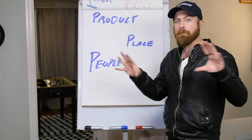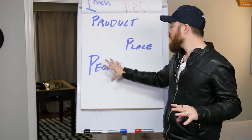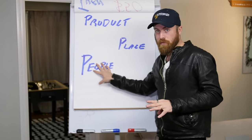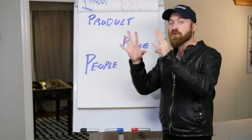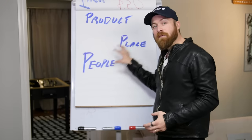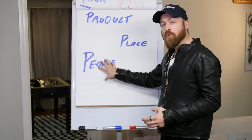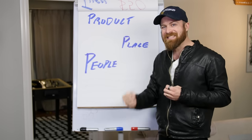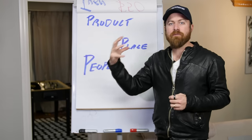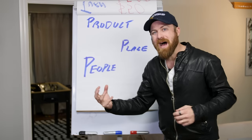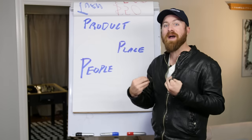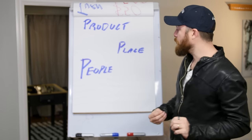People, place, product — three steps. There's a little preview of my bigger course, but three steps to do it because you need to reach people. We're going to be using Google Ads to reach people to sell a product to, then we're going to take them from Google to a place where we can sell them.